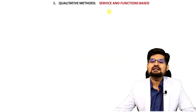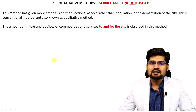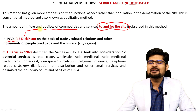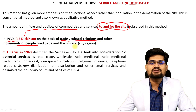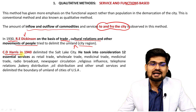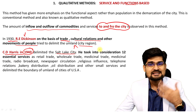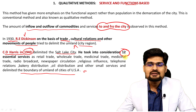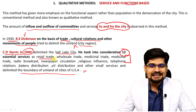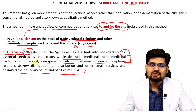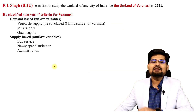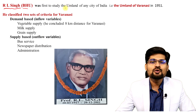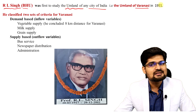The qualitative or service-and-function-based approach involves studying the inflow and outflow of commodities. R.E. Dickinson (1930) talked about trade, cultural relations, and other movements of people to delimit the city region concept. C.D. Harris in the 1940s worked on Salt Lake City, taking into consideration data on 12 essential services — including retail trade, wholesale trade, religious influence, newspaper circulation, and radio broadcast — and delimited the boundary of the umland where these 12 services exist. In the Indian context, Professor R.L. Singh of Banaras Hindu University was the first geographer who studied the umland of any Indian city — Varanasi — in 1951.